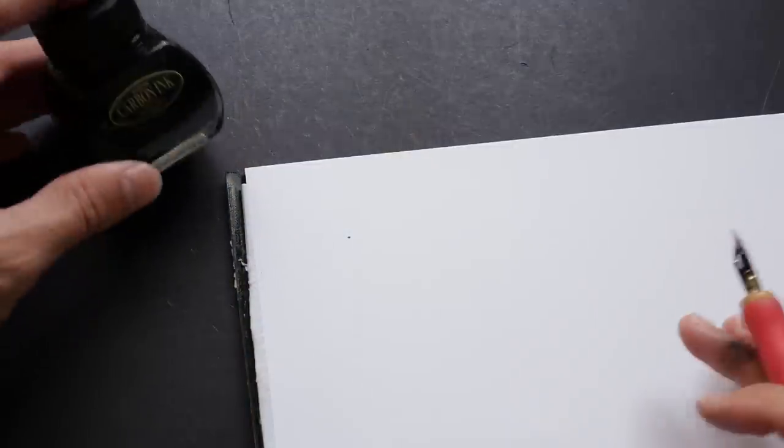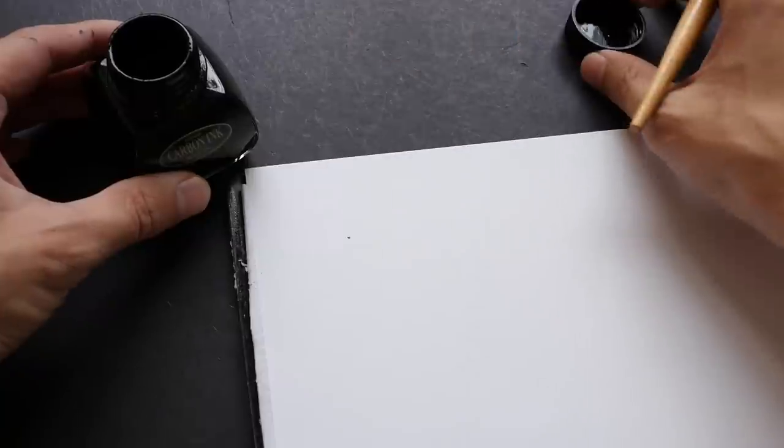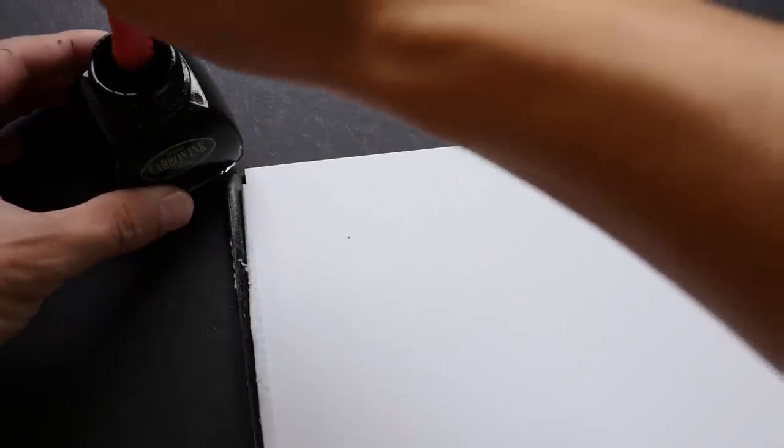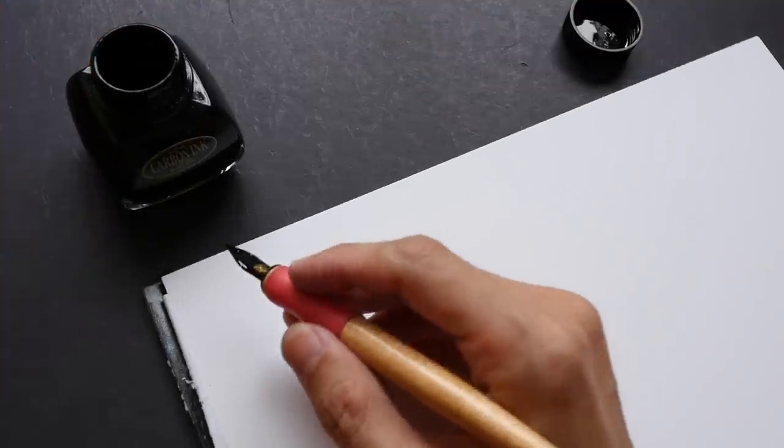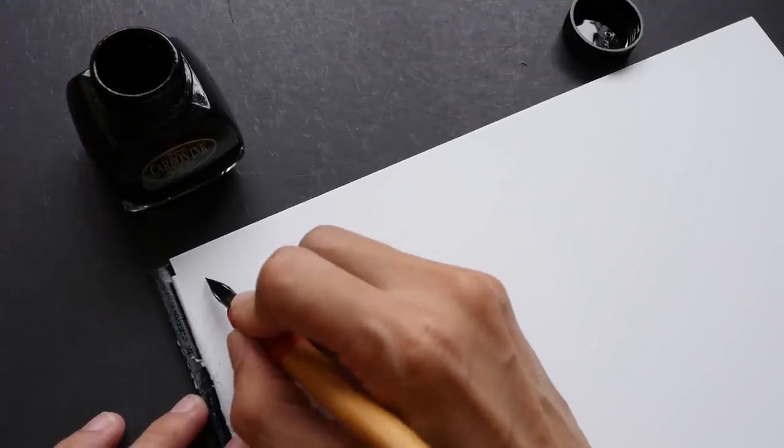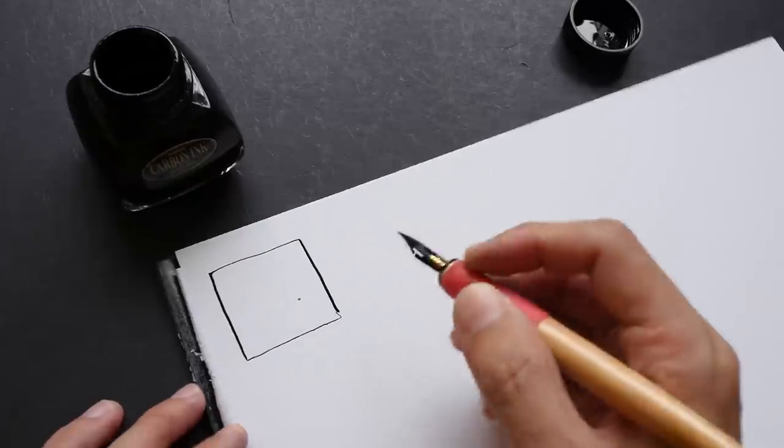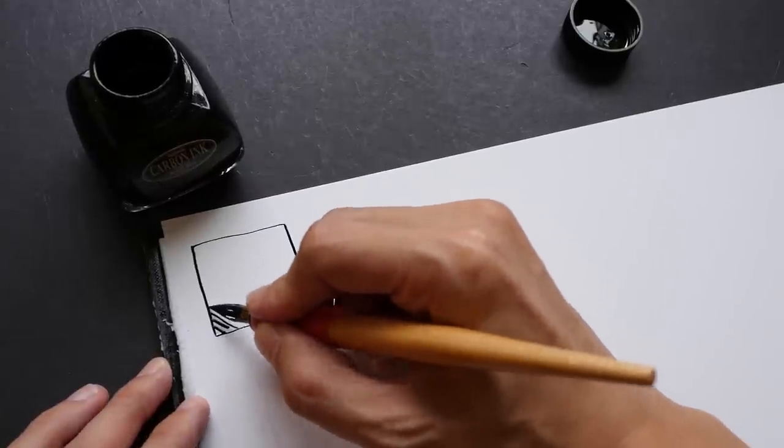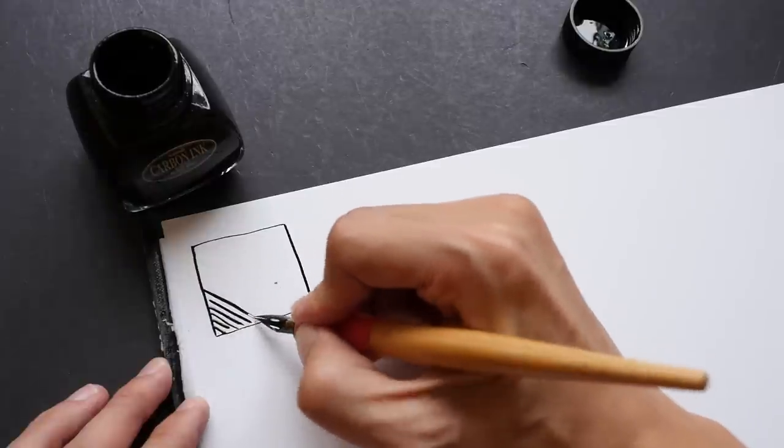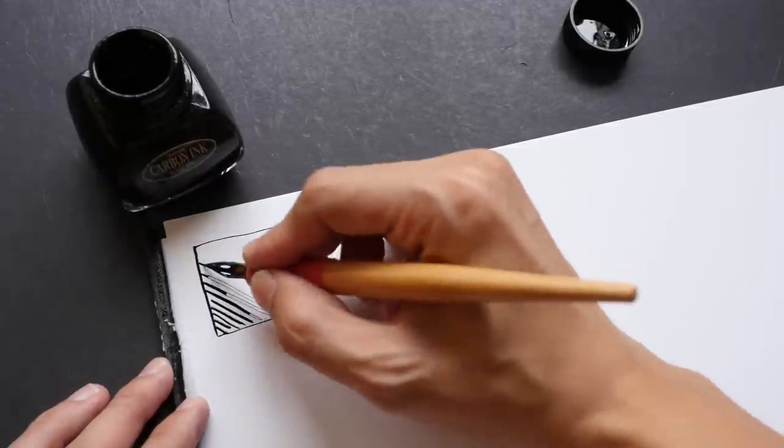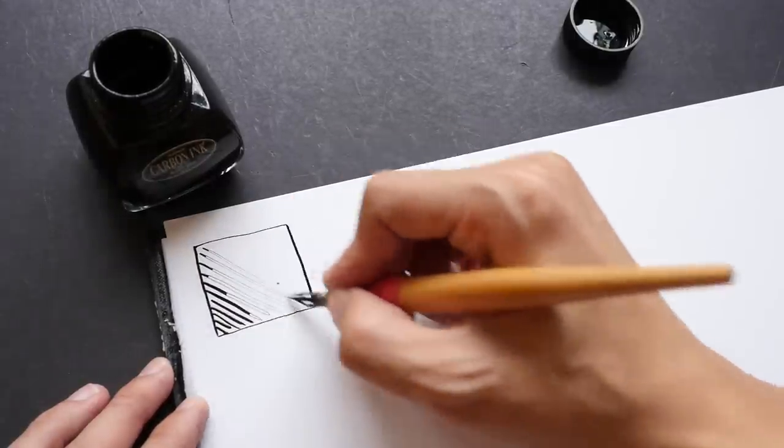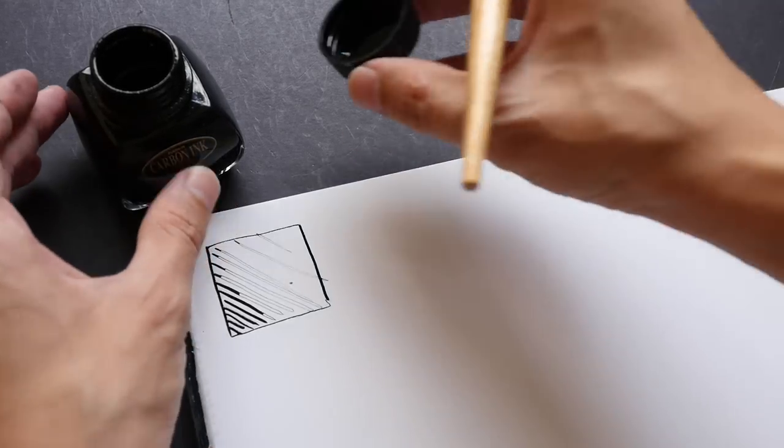The ink I'm using is Platinum Carbon ink. It's a waterproof fountain pen ink that is specially made for fountain pen use. So let me just dip the dip pen into the ink bottle and see how much I can draw with just one dip. This is the standard Zebra nib that I'm using and that is about how much I can basically draw with one dip of the nib.